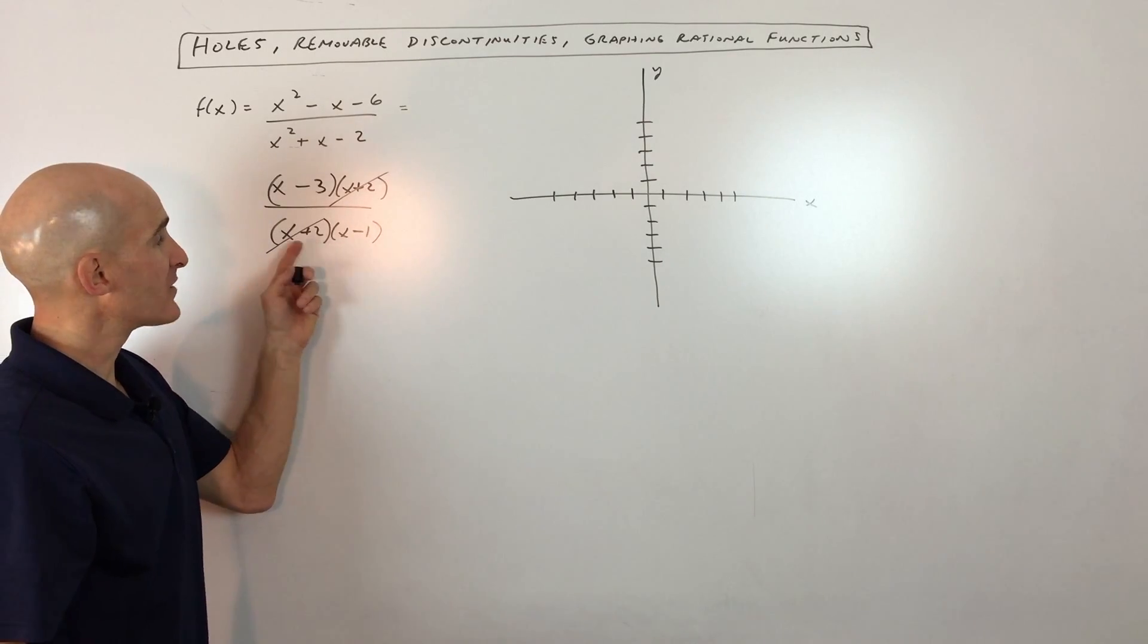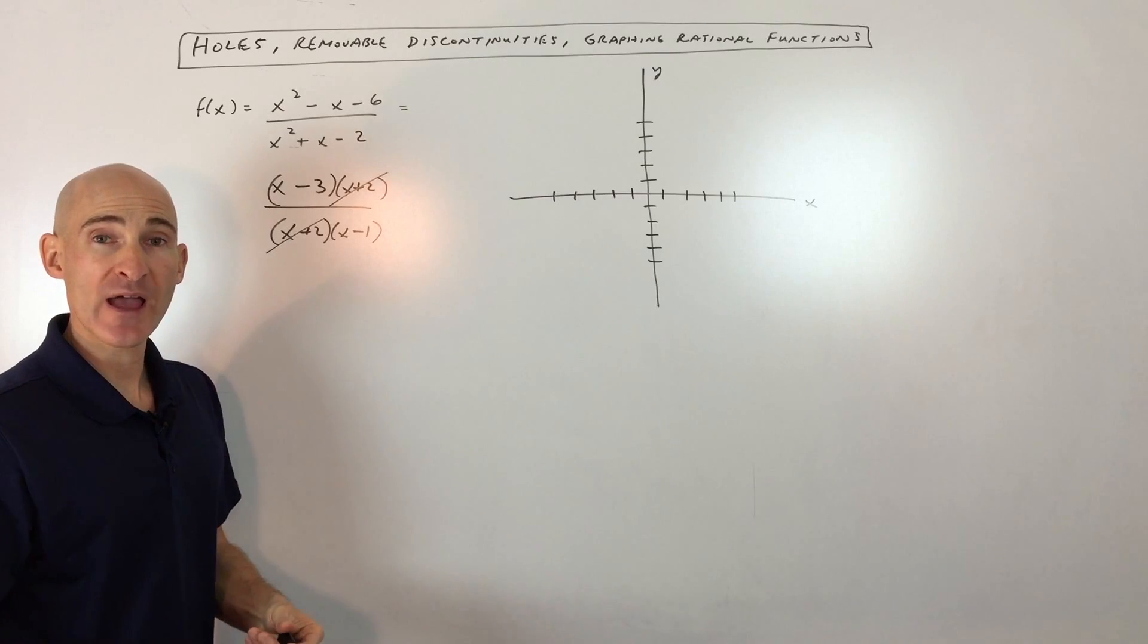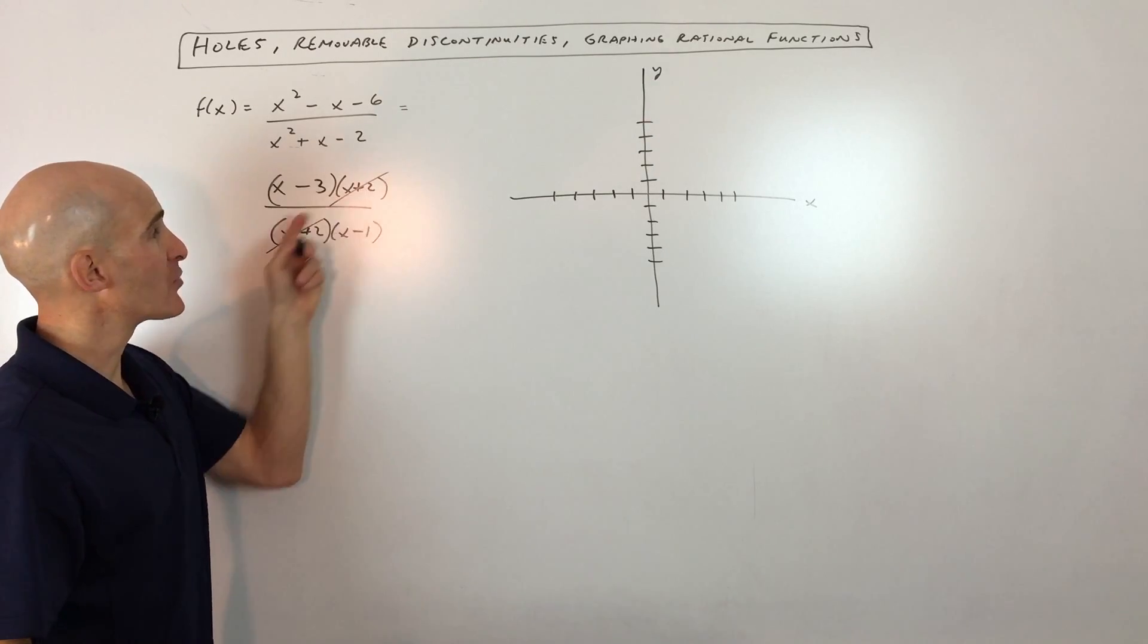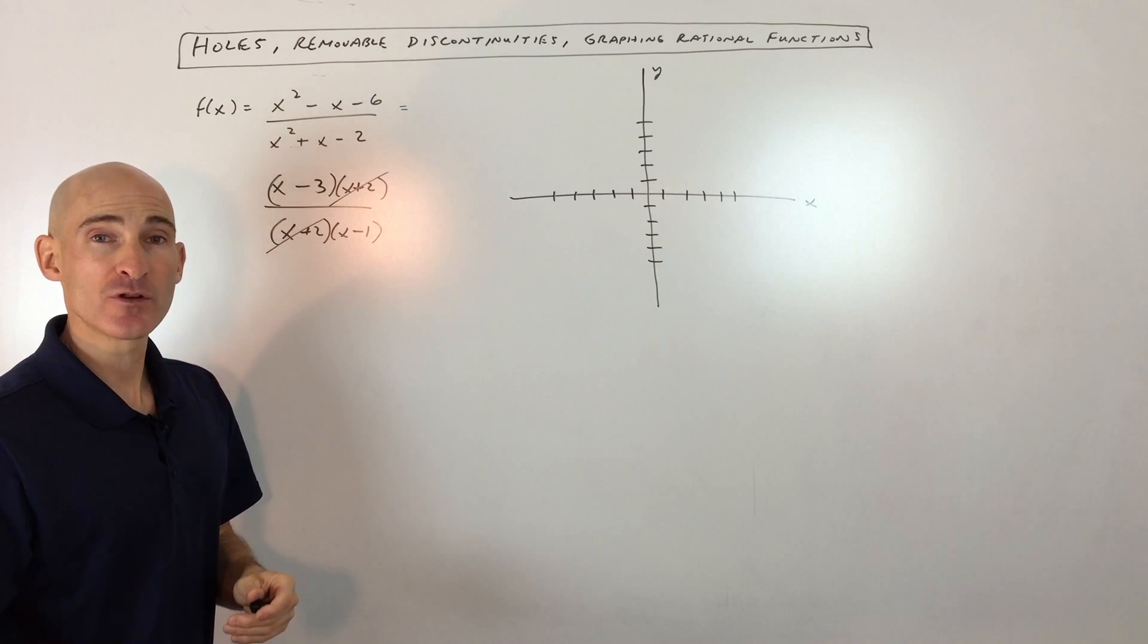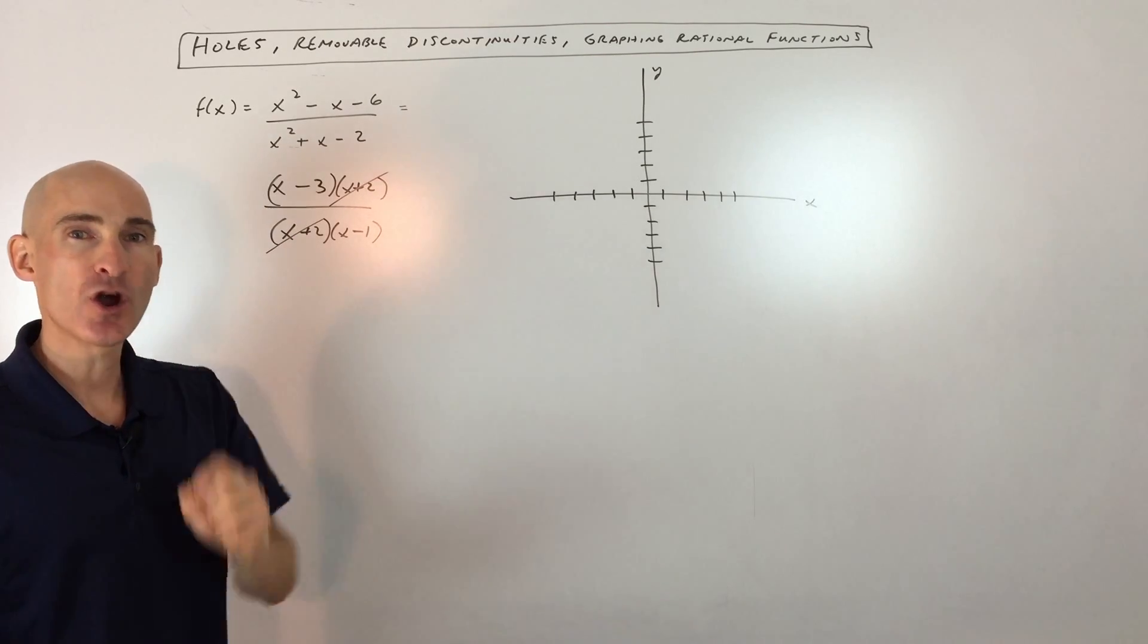Normally we don't want the denominator equal to 0 because that's undefined and we would get a vertical asymptote, but when the factor in the numerator and denominator cancel like this, you don't get a vertical asymptote. You actually get a removable discontinuity. It's actually like a hole in the graph.